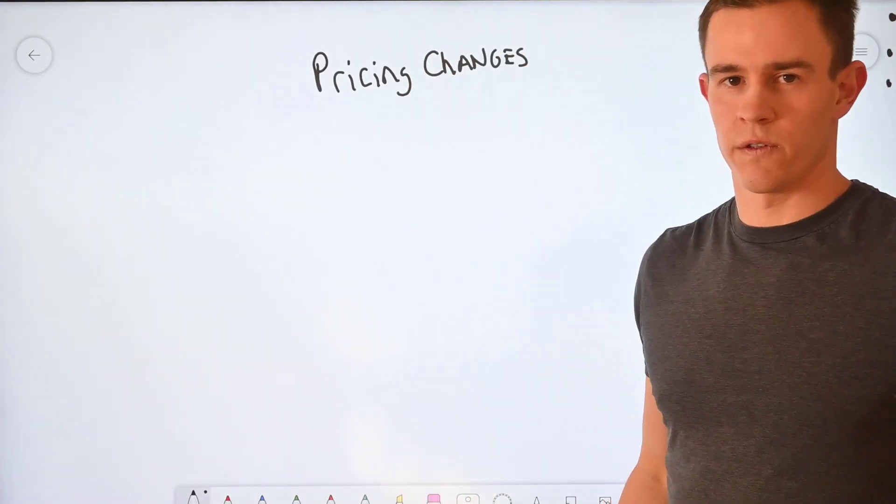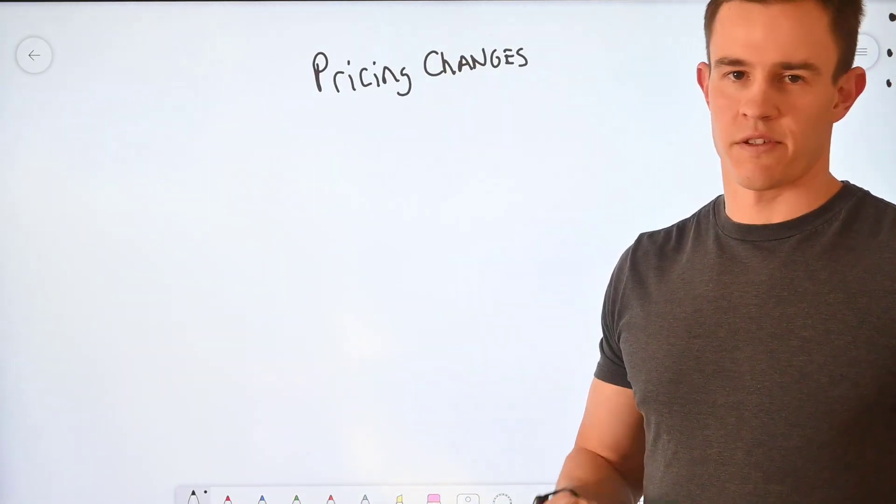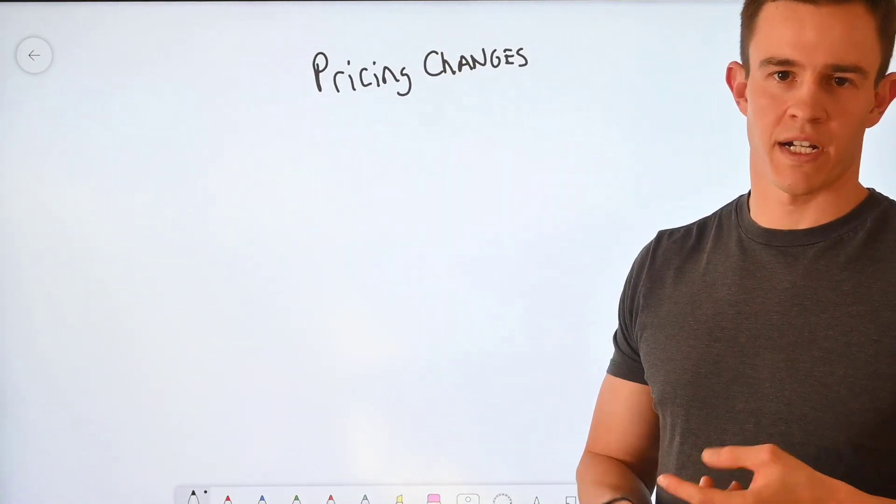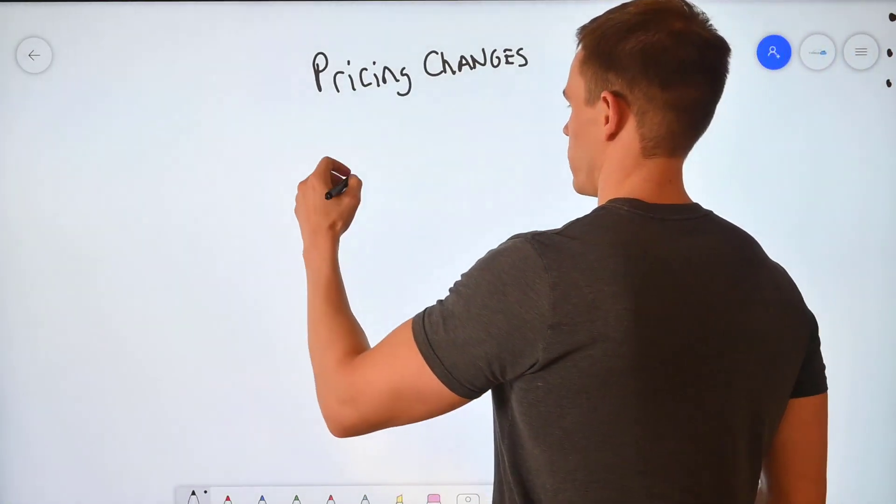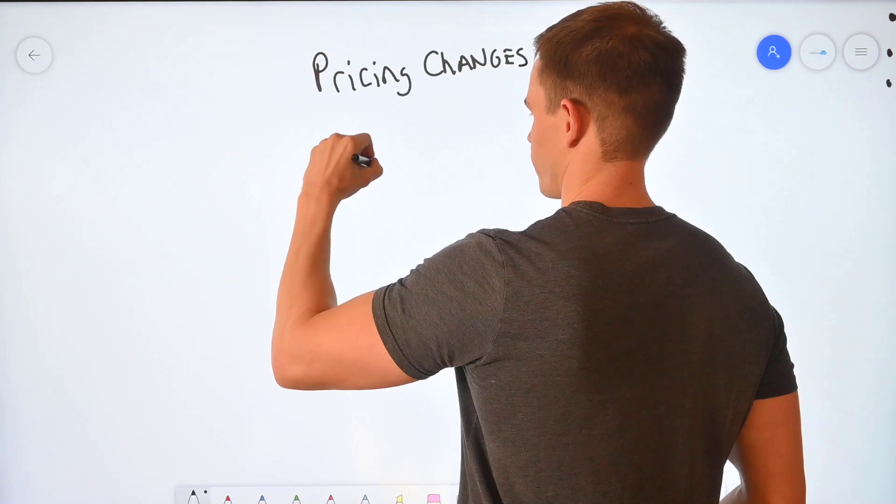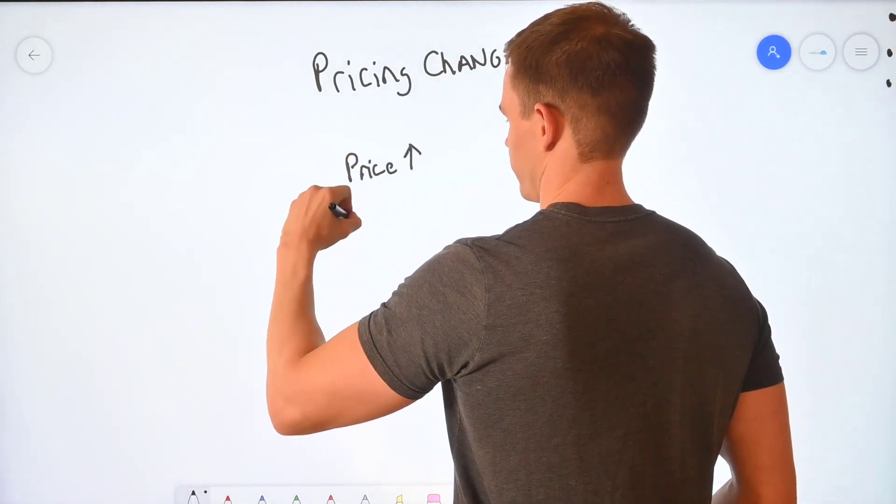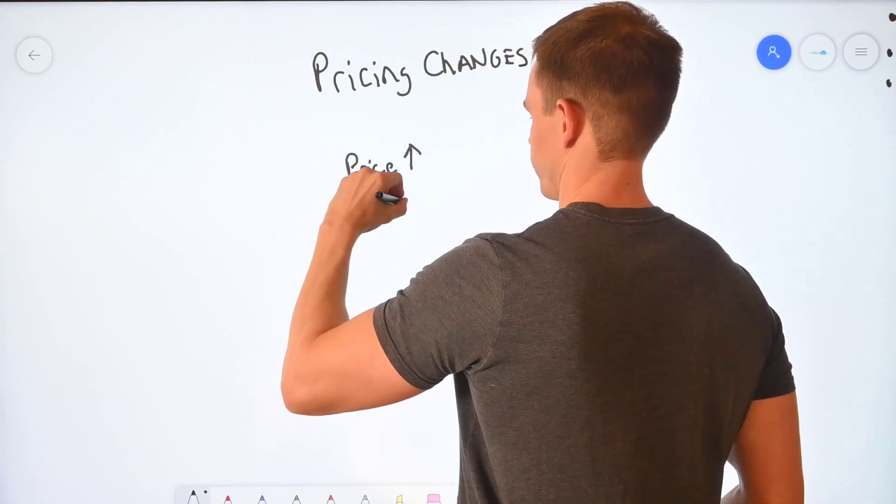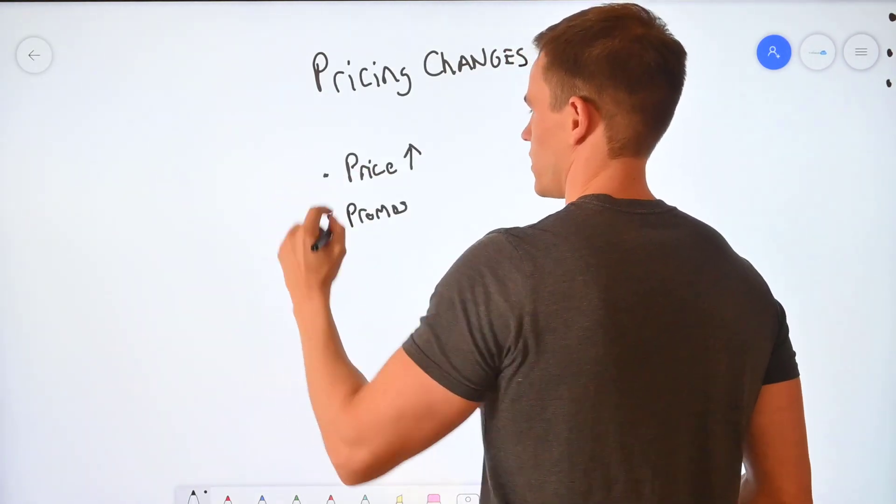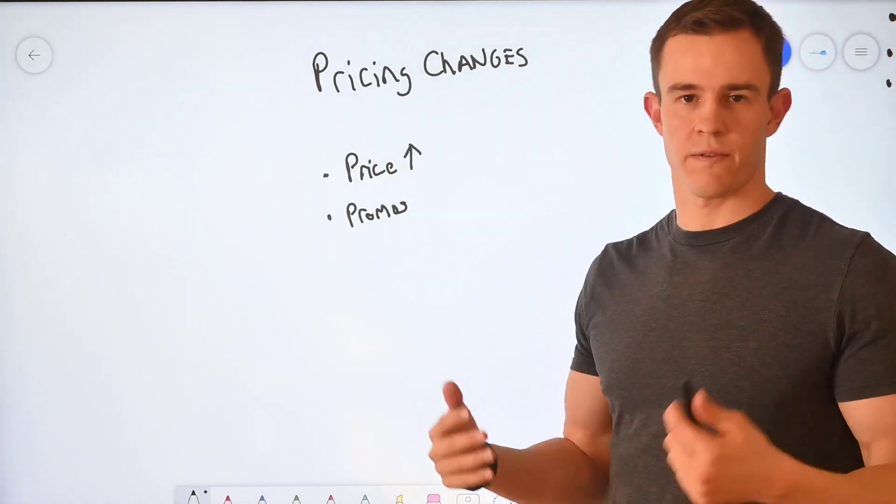So essentially here with NewCommerce, we have some trickling milestones that we go through where there's either price increases or we have time-bound promotions. So when we think about the examples here again,